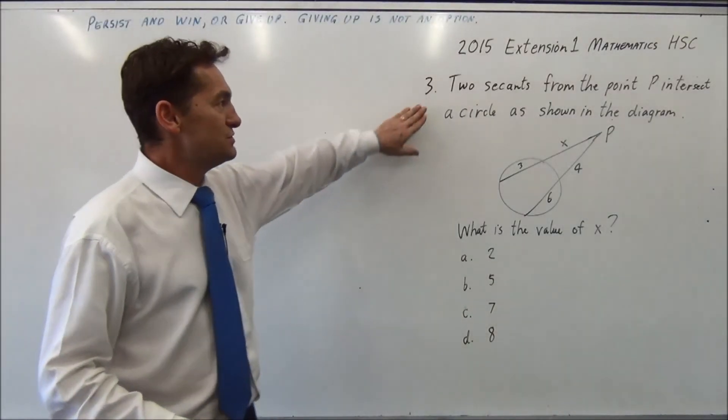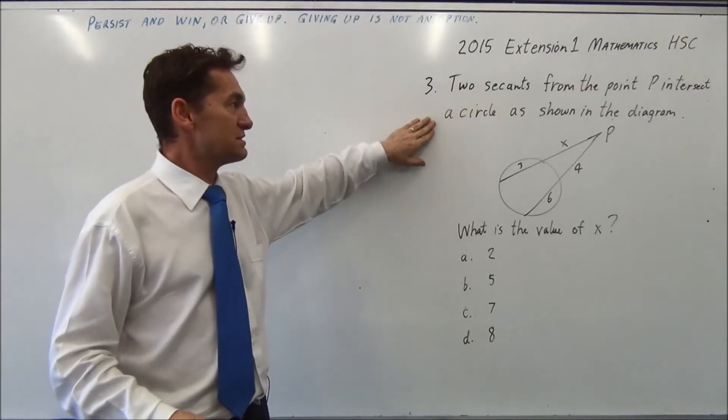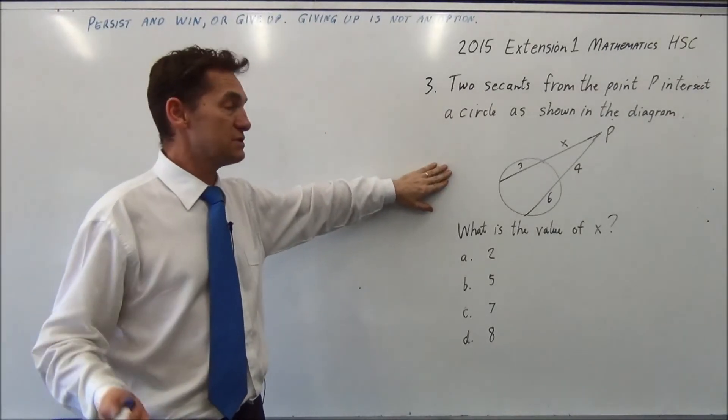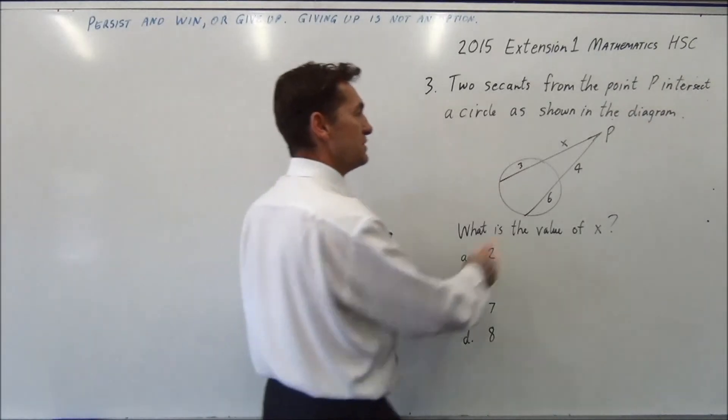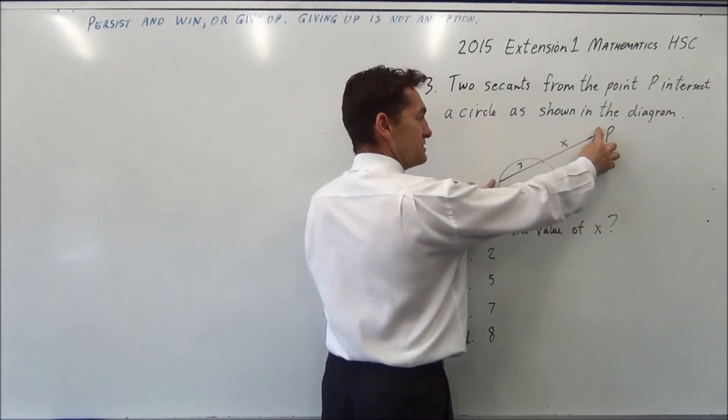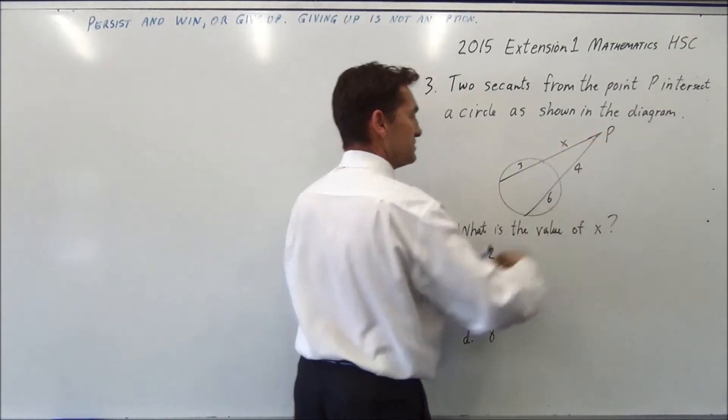Question three. Two secants from the point P intersect a circle as shown in the diagram. So from this, you're going to use a circle rule. So you're going to have this length multiplied by this length equals this length multiplied by this length.